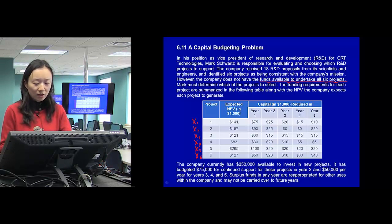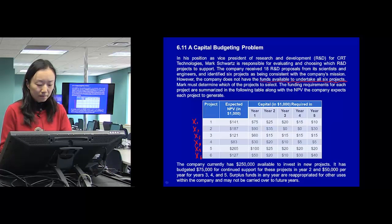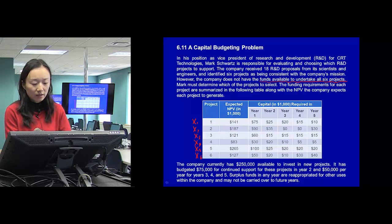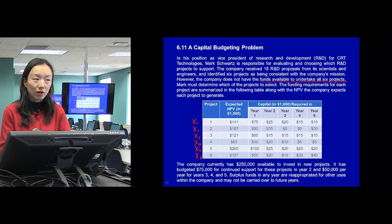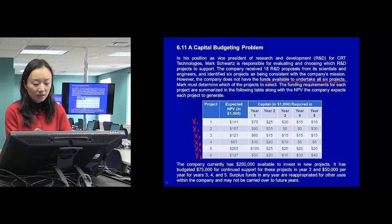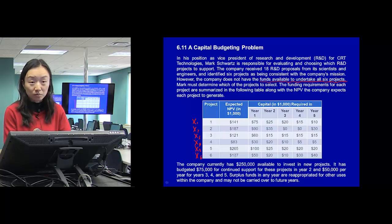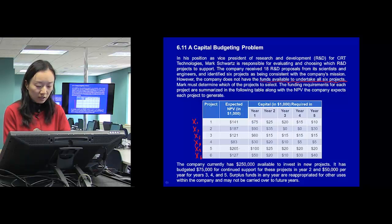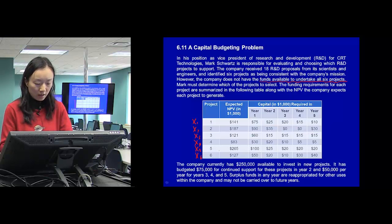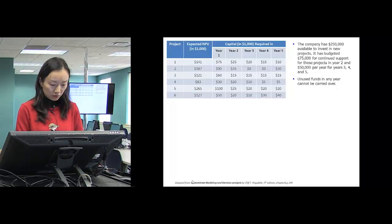Then, how do we write objective function? How do we know which ones are included? Say for example, if x1, if project 1 is chosen, then this $141,000 will be included in the total NPV, right? If it's not chosen, then it will not be included. Same for the expected NPV for the other project. If project 5 is chosen, then this $265,000 will be included in the total NPV. If it's not chosen, then it won't.